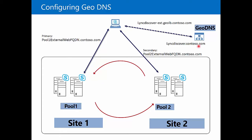The idea here when we look at GeoDNS is the ability for us to service a request to a particular user based on their geography. So if I am in the Site 1 region and I query for linkdiscover.contoso.com, the global load balancers would be able to send me to Pool 1. Likewise, if I'm near Site 2 and I type in linkdiscover.contoso.com, the global load balancers would be able to send me to Pool 2.